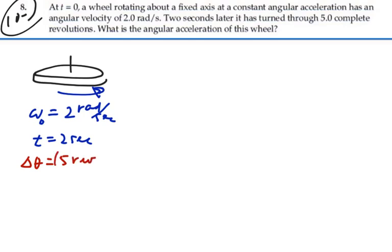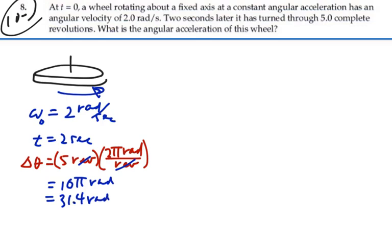Immediately convert that to radians. So we have two pi radians per revolution. And getting rid of revolutions, that's going to be 10 pi radians or 31.4 radians. That's our angle.